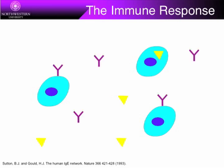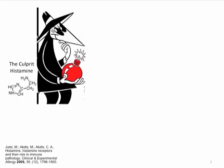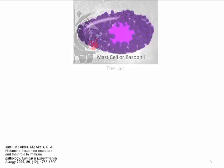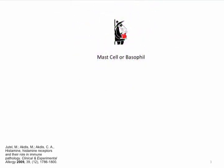Antibodies bind to antigens in a highly specific manner and persist after the antigen is removed. When that antigen is encountered again, the presence of antibodies in the blood and on cell surfaces results in an immediate response that can elicit the release of another molecule called histamine. Histamine is produced from the amino acid histidine and is normally stored in white blood cells called mast cells, or basophils. Upon stimulation by antigens, histamine is released in a process called degranulation.